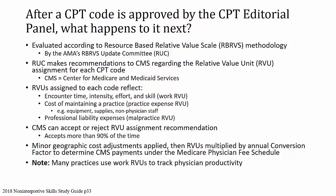RVUs are assigned to each code to reflect the encounter time, intensity, effort, and skill — that's the work RVU — plus the cost of maintaining a practice, incorporated as the practice expense RVU, which includes equipment, supplies, and non-physician staff. Professional liability expenses are incorporated as the malpractice RVU. CMS can accept or reject the RVU recommendation but tends to accept more than 90%. Minor geographic cost adjustments are applied, and RVUs are multiplied by the annual conversion factor to determine CMS payments under the Medicare Physician Fee Schedule. Many practices use work RVUs to track physician productivity.